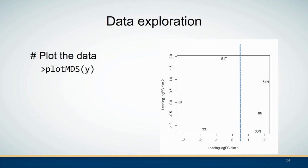EdgeR provides some basic data exploration tools. The plotMDS() function produces a plot in which distances between samples correspond to the leading biological coefficient of variation between those samples. In this plot you may find that dimension one separates the tumor from the normal samples, while dimension two corresponds to the patient number, representing the paired nature of the samples. The tumor samples appear to be more heterogeneous than the normal samples.